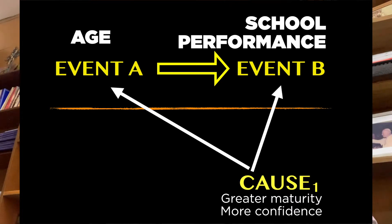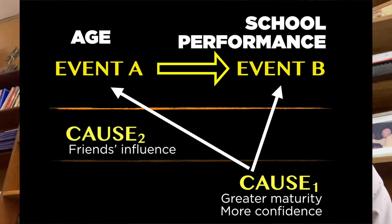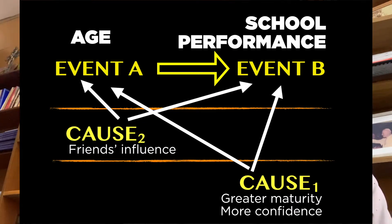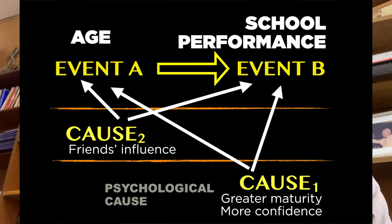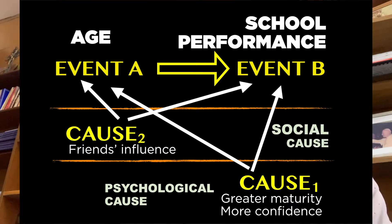Another cause would be perhaps the friends of the student begin to value and look up to students who do well academically, and as a result of that, the student himself or herself may desire to be successful. Just by looking at this simple example and this simple diagram, we immediately see that explaining a phenomenon scientifically does not just entail identifying one cause. It entails identifying different causes and different types of causes, and narrating how these causes interact with one another to lead to the phenomenon.